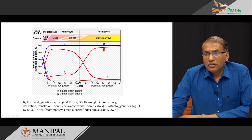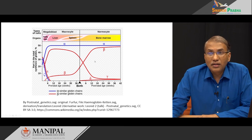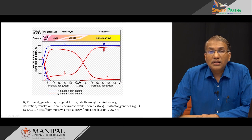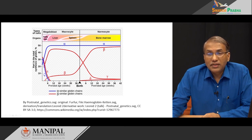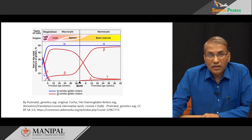Whenever there is a problem in adults with the beta chain — for example, in beta thalassemia where production of the beta chain is not occurring effectively because of a genetic defect — in adults, gamma chain production sometimes increases rapidly. So the person with beta thalassemia will sometimes have reactivation of gamma chains in adults, and will have HbF in addition to adult hemoglobin in their blood. This is a protective mechanism.